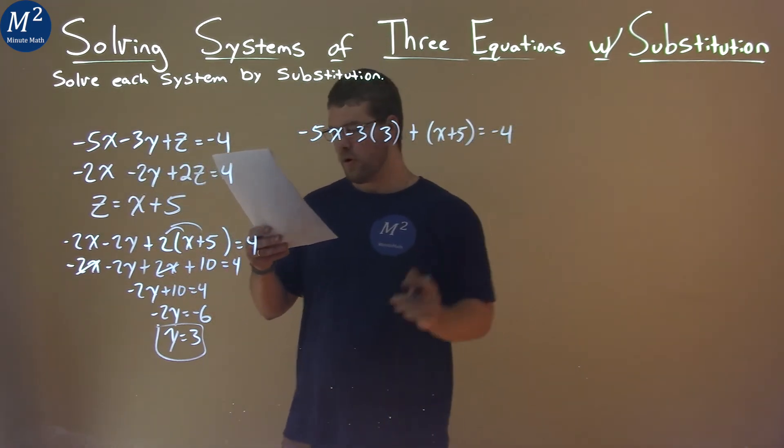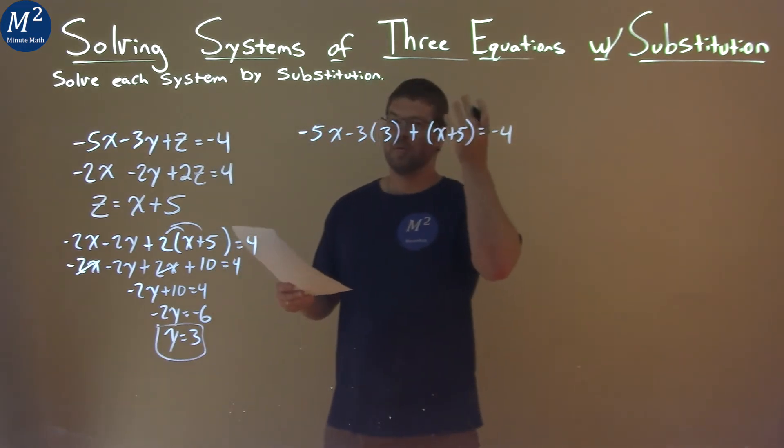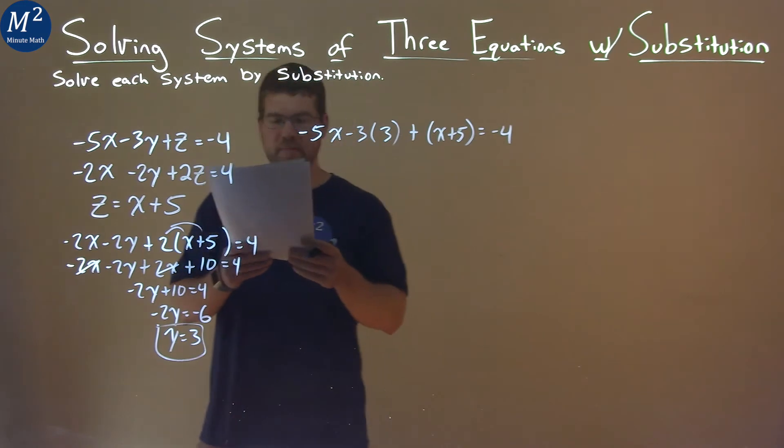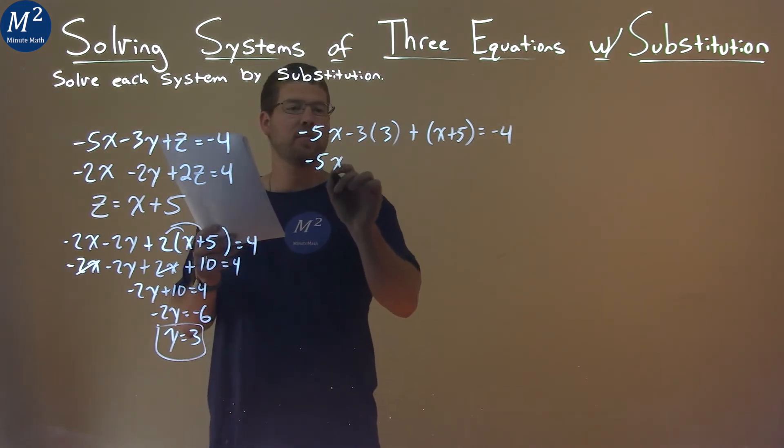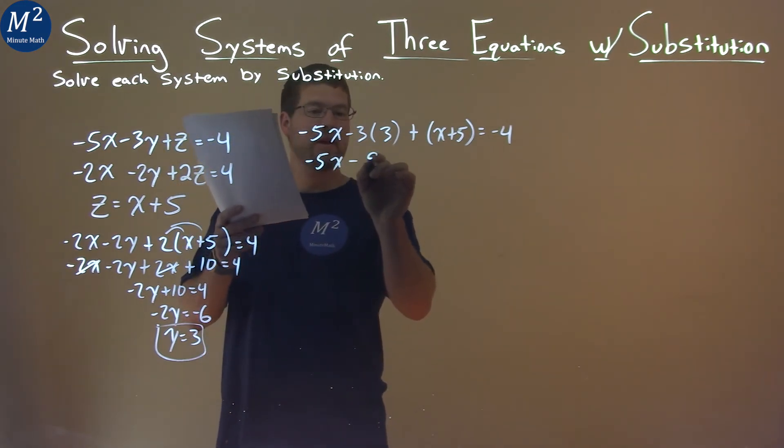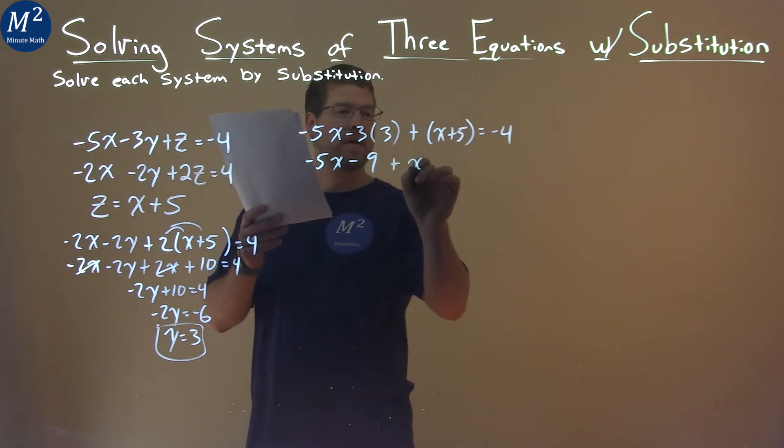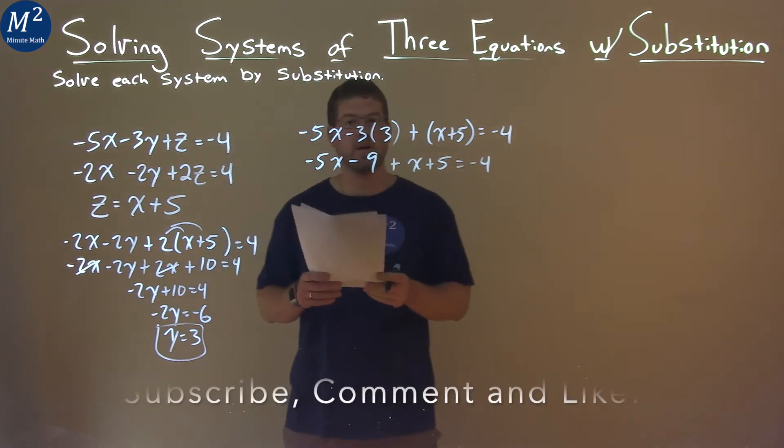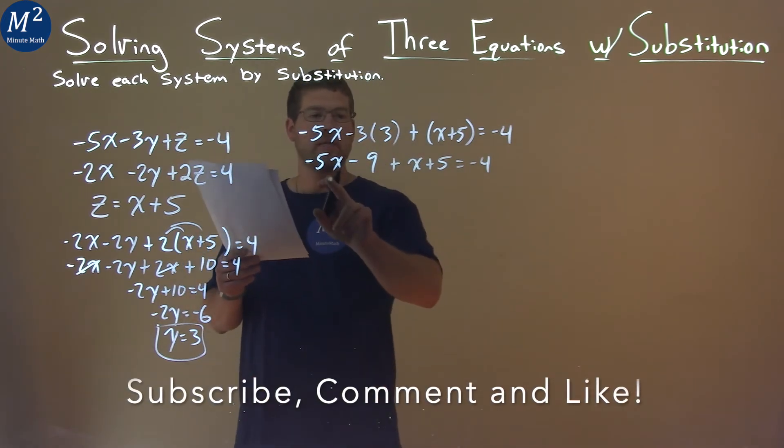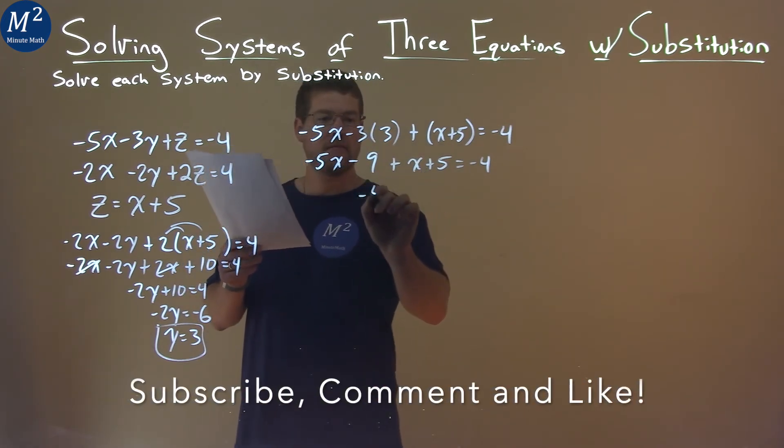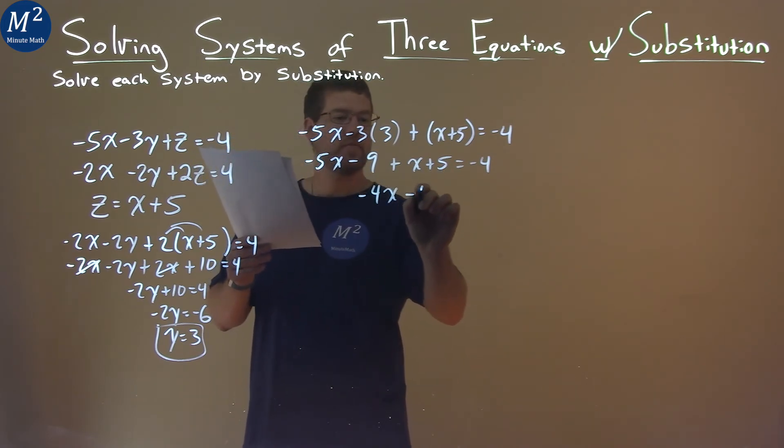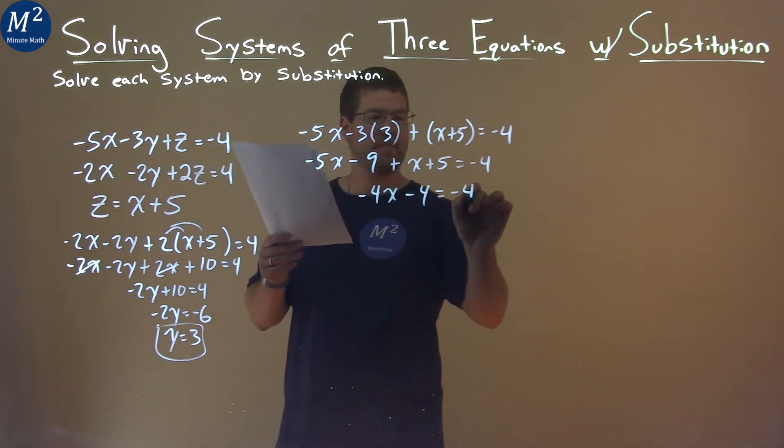And now, we have an equation only with x's, so we can simplify this, or solve it, to get x by itself. Negative 5x comes down, negative 3 times 3 is negative 9, plus x plus 5 equals negative 4. Let's combine our like terms here. Negative 5x plus 1x is negative 4x. Negative 9 plus 5 is negative 4, equals negative 4.